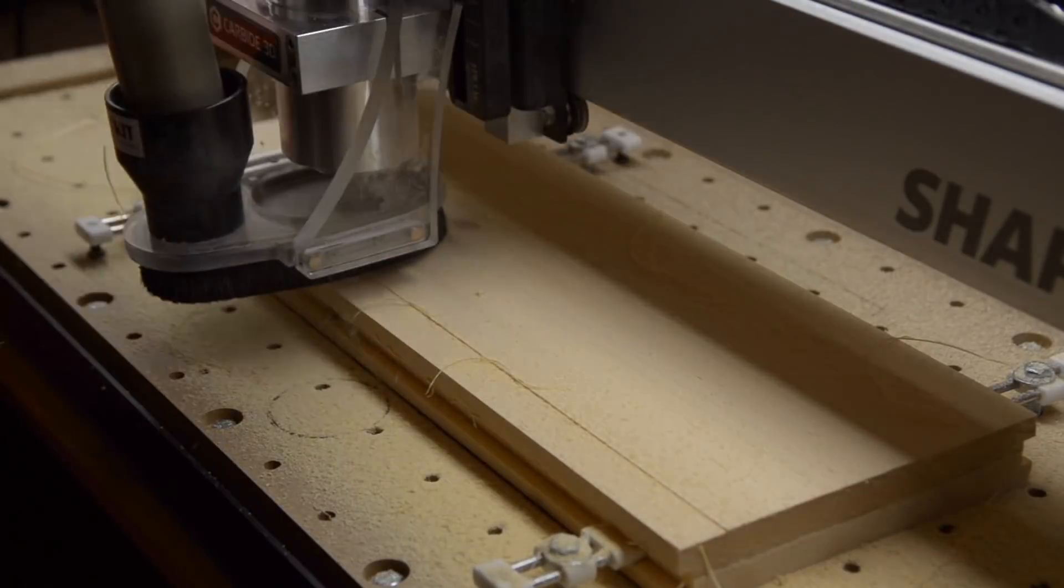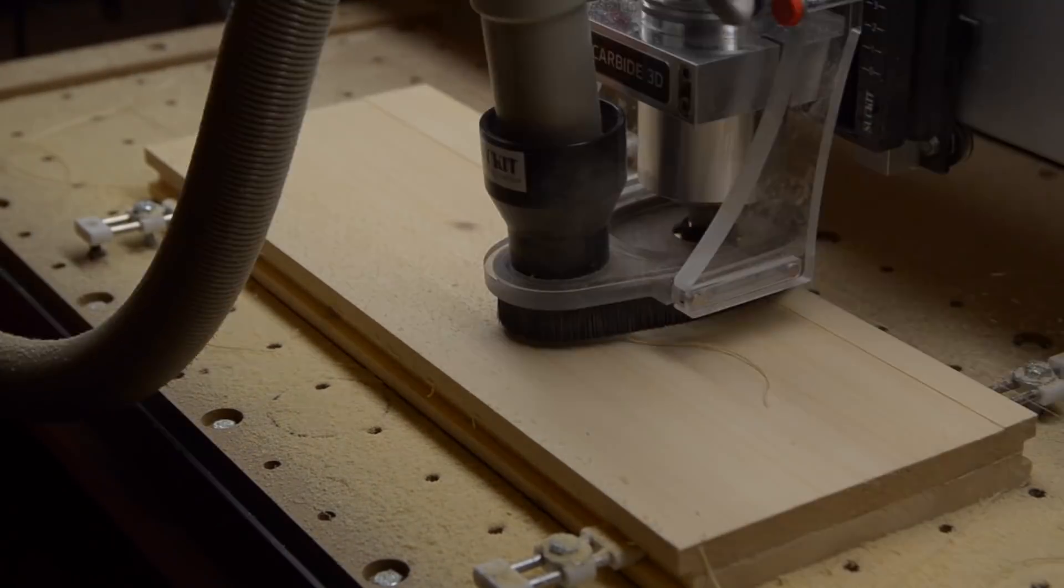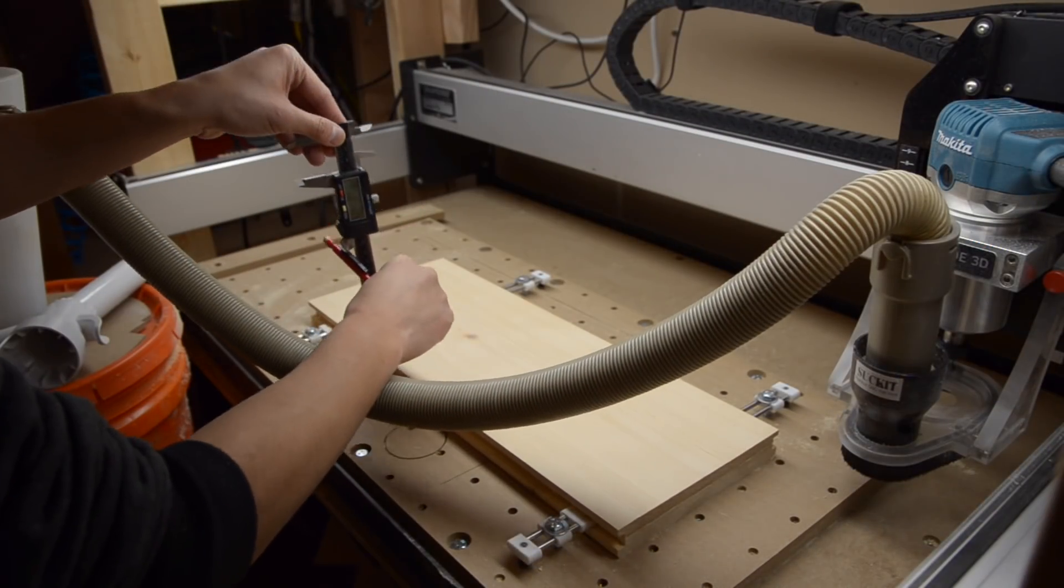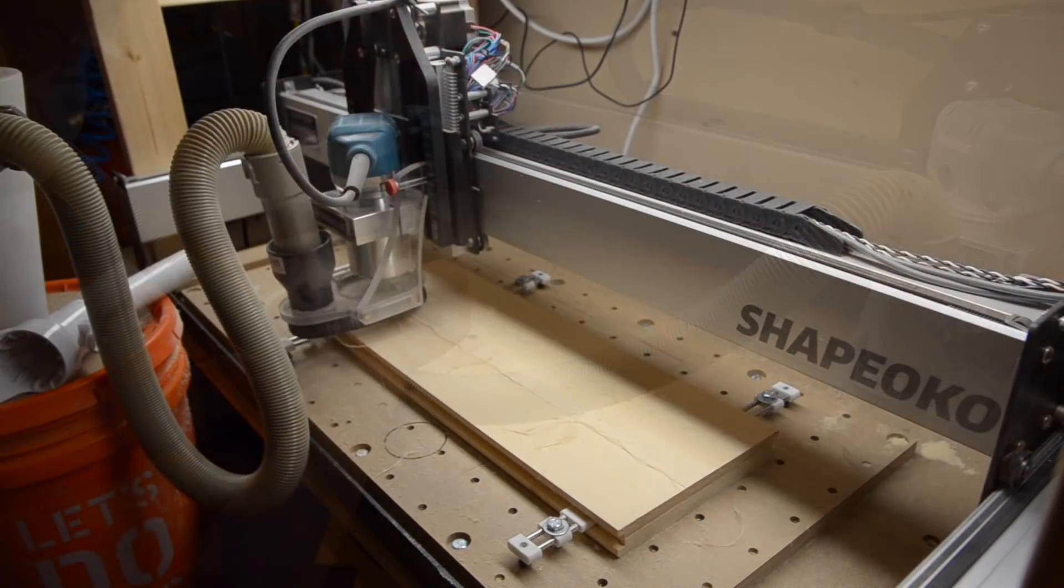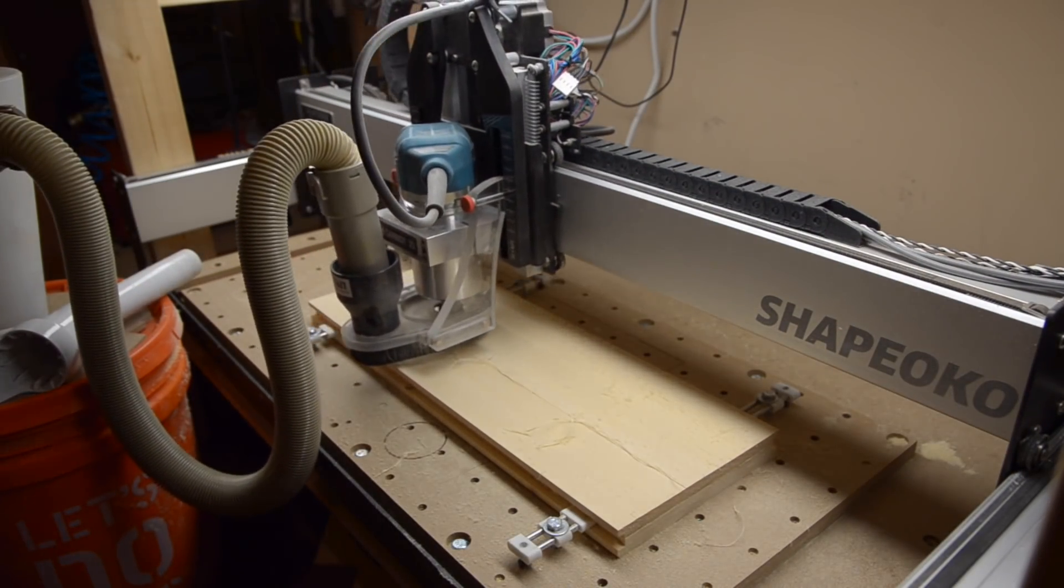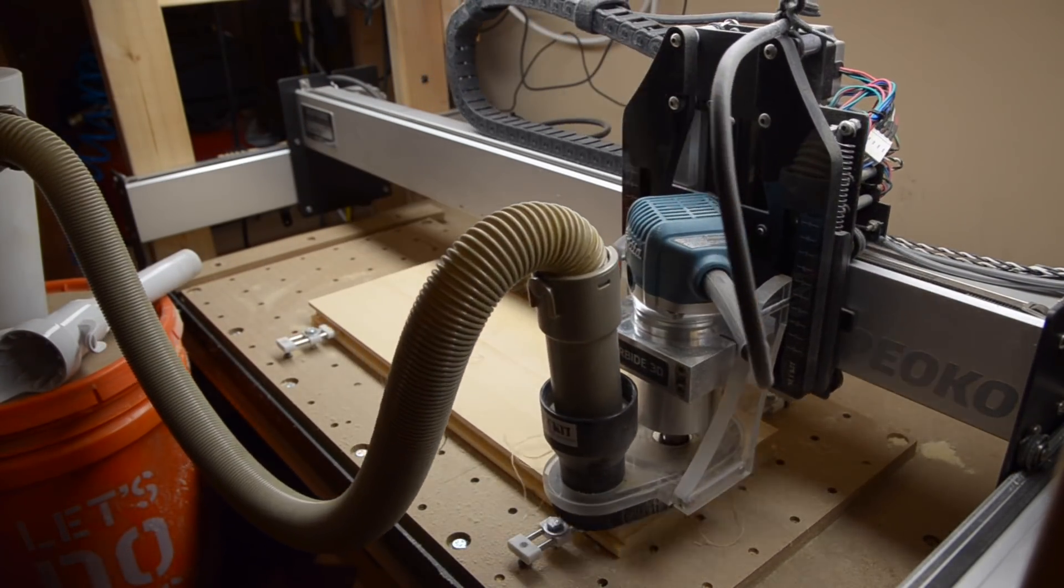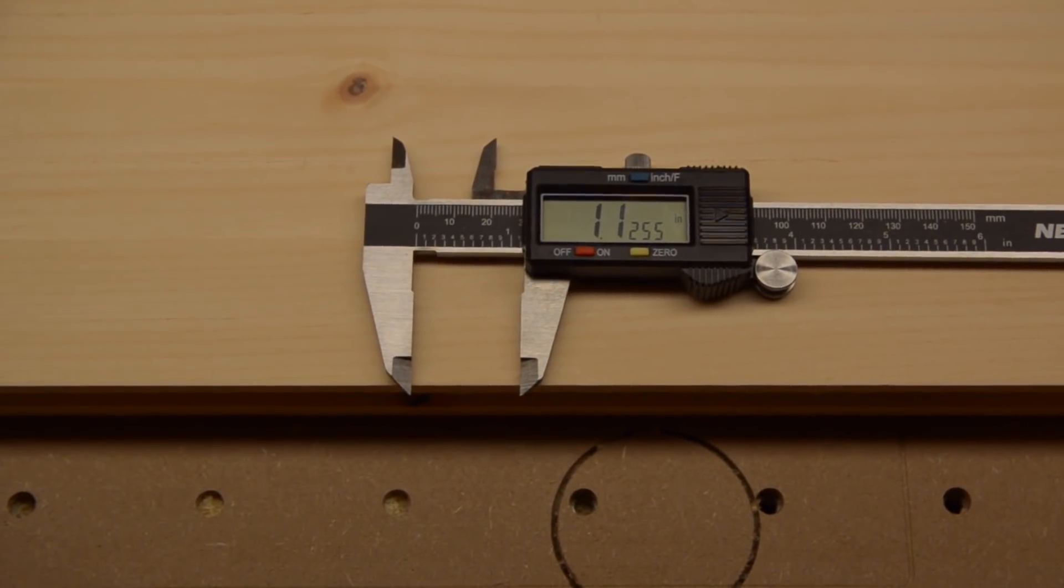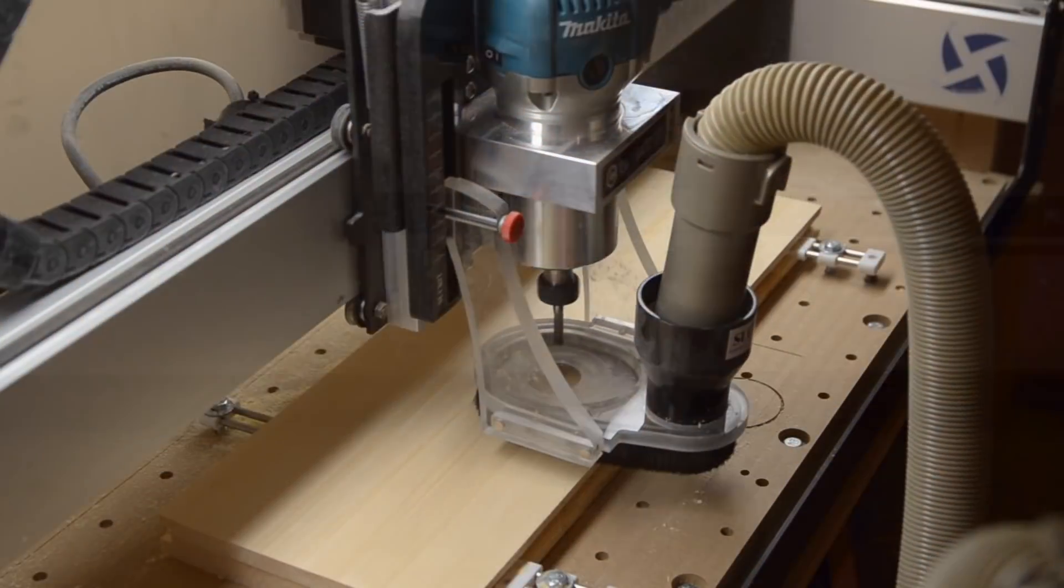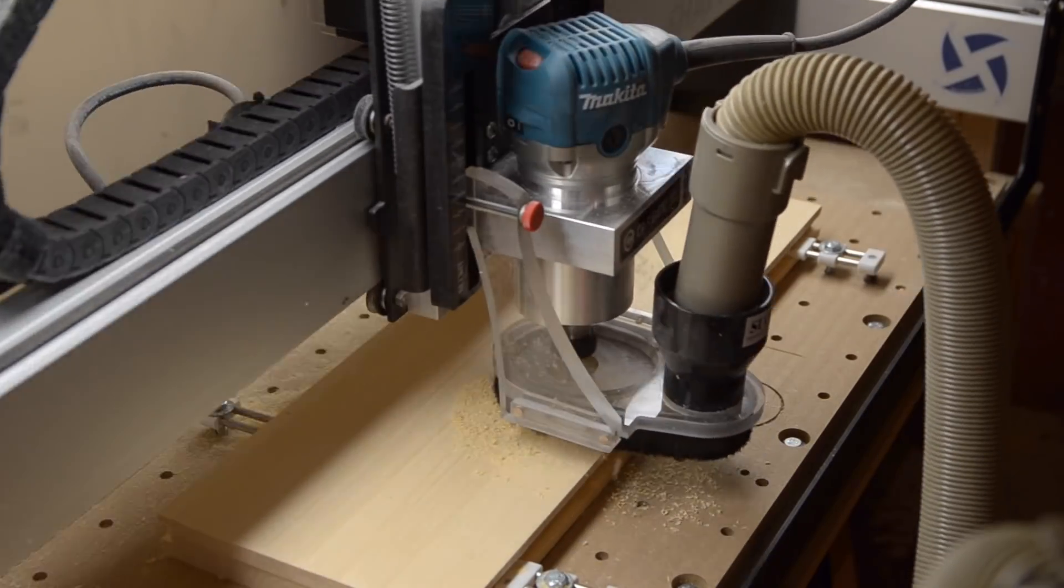Since there was no double sided tape acting as a standoff between my wood and the waste board, I could directly measure the thickness of my stock with calipers. Based on the measured distance, I adjusted my zero point and re-ran the last pass of my facing operation to bring my stock to within five thousandths of one and an eighth inches of thickness. Then I loaded up a quarter inch end mill to perform my first adaptive clear.